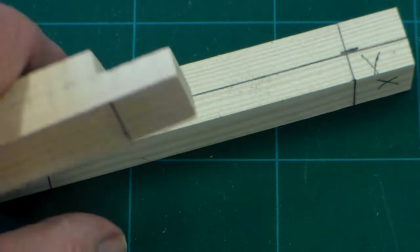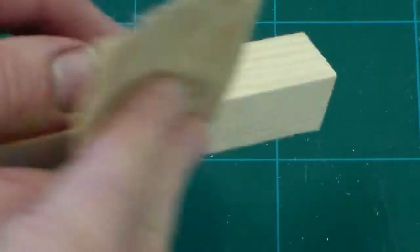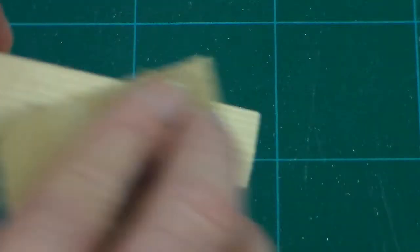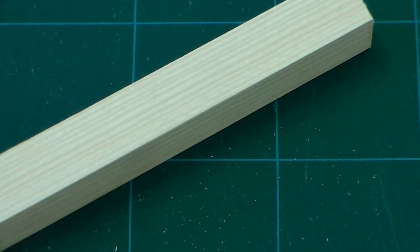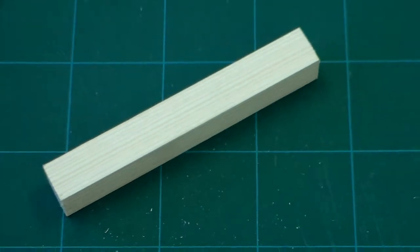First of all we're going to take a piece of wood here and we're just going to go around and clean it up, make sure there's no sharp edges on it. When we've done that we're ready to start marking out.